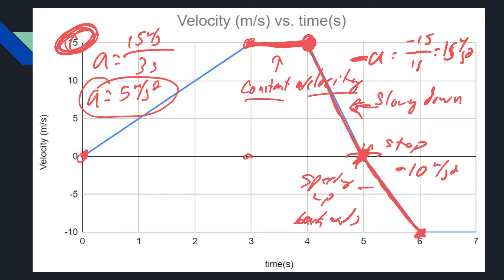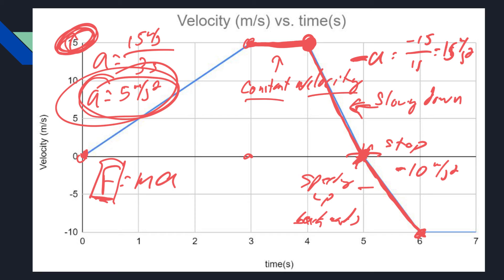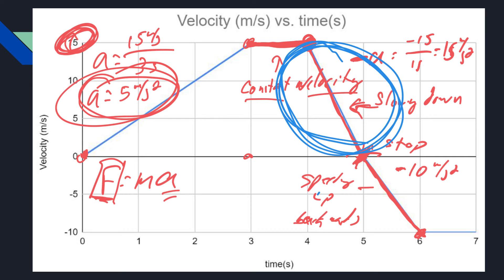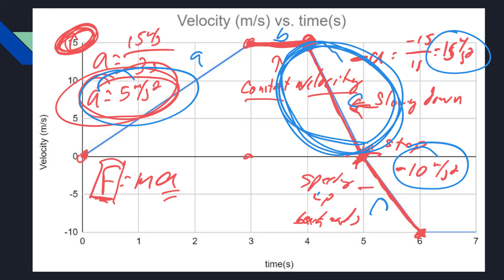Just like the last problem, sometimes they don't ask about acceleration — maybe they ask about force. Remember force is mass times acceleration, so if they ask which segment has the greatest force, you just figure out which one has the greatest acceleration. The answer is the steepest slope segment — even if it's negative. In this example segments are 5, 15, and 10 meters per second squared respectively, so segment C has the greatest acceleration.